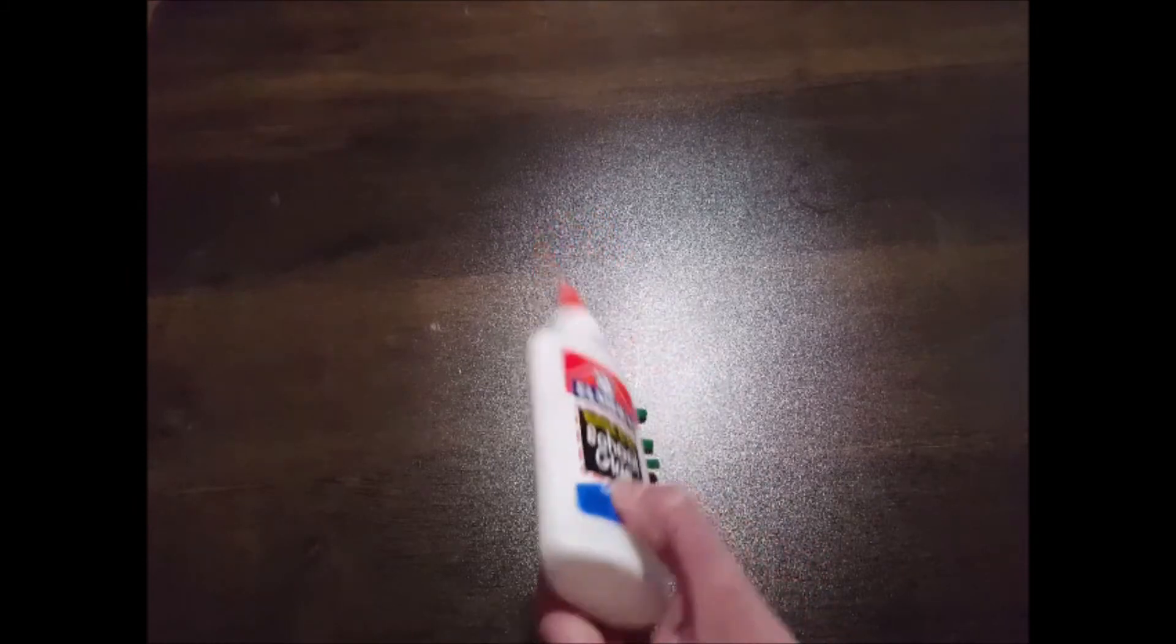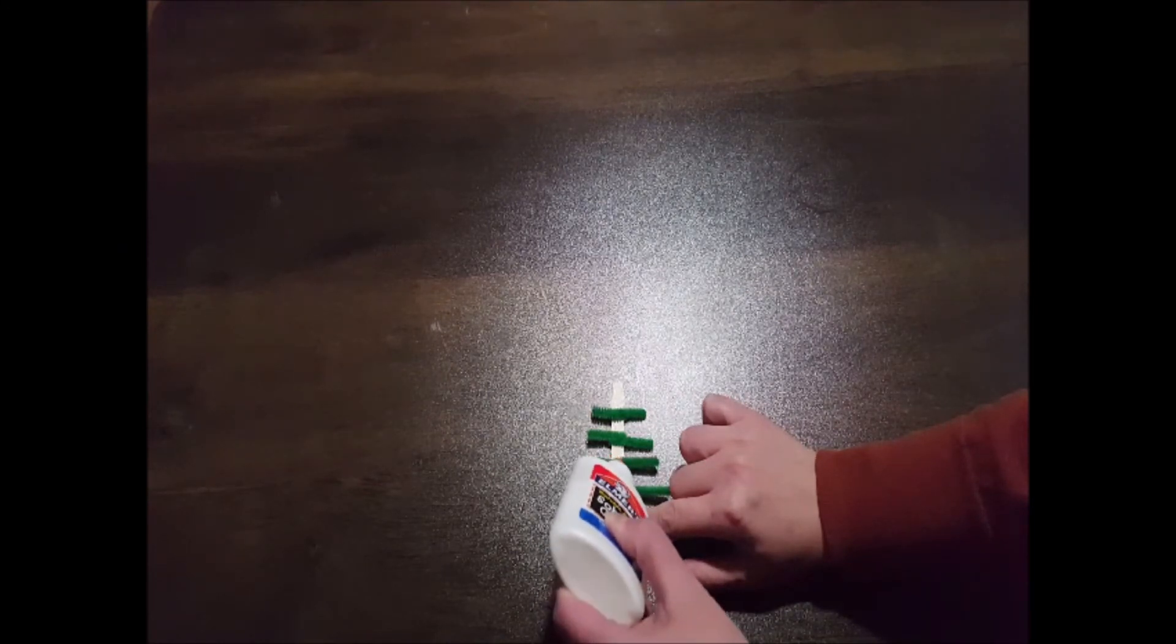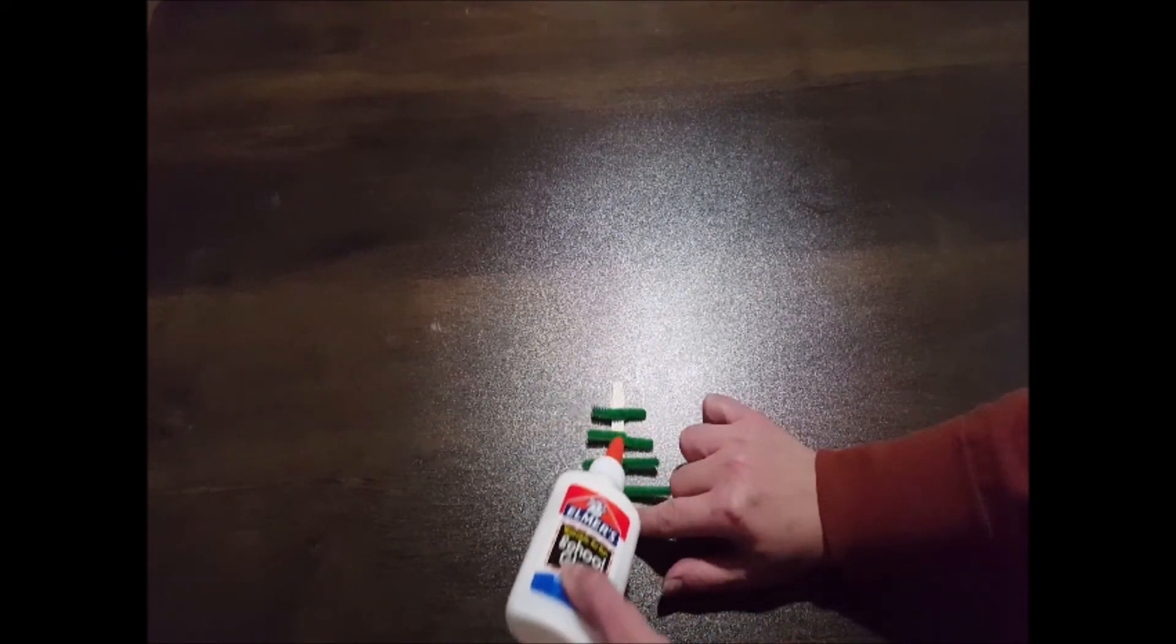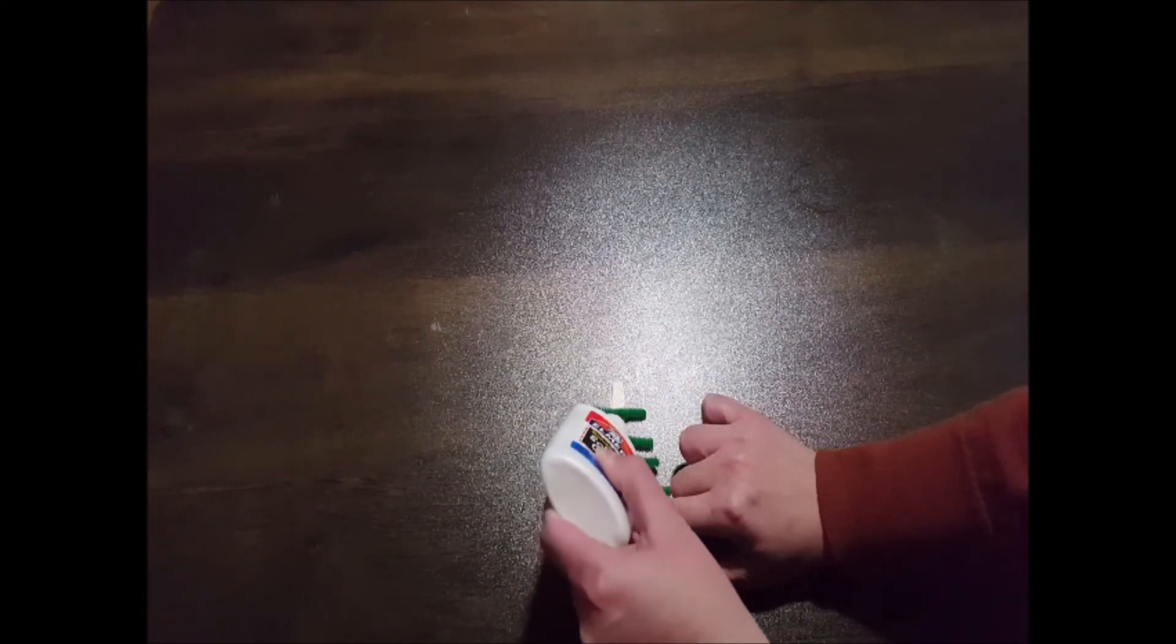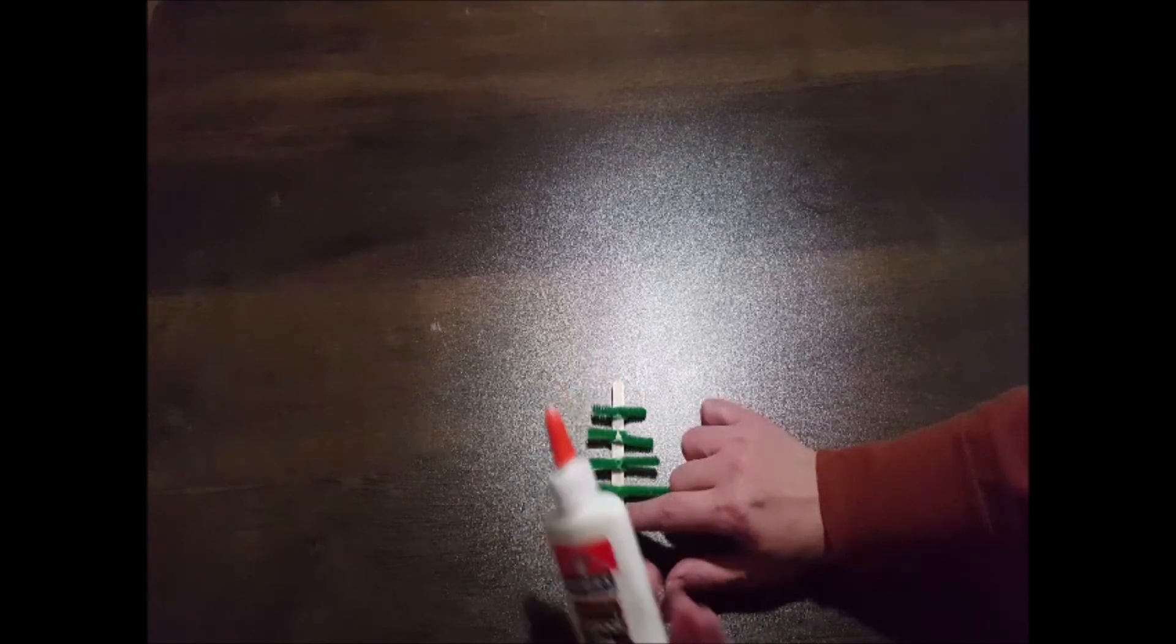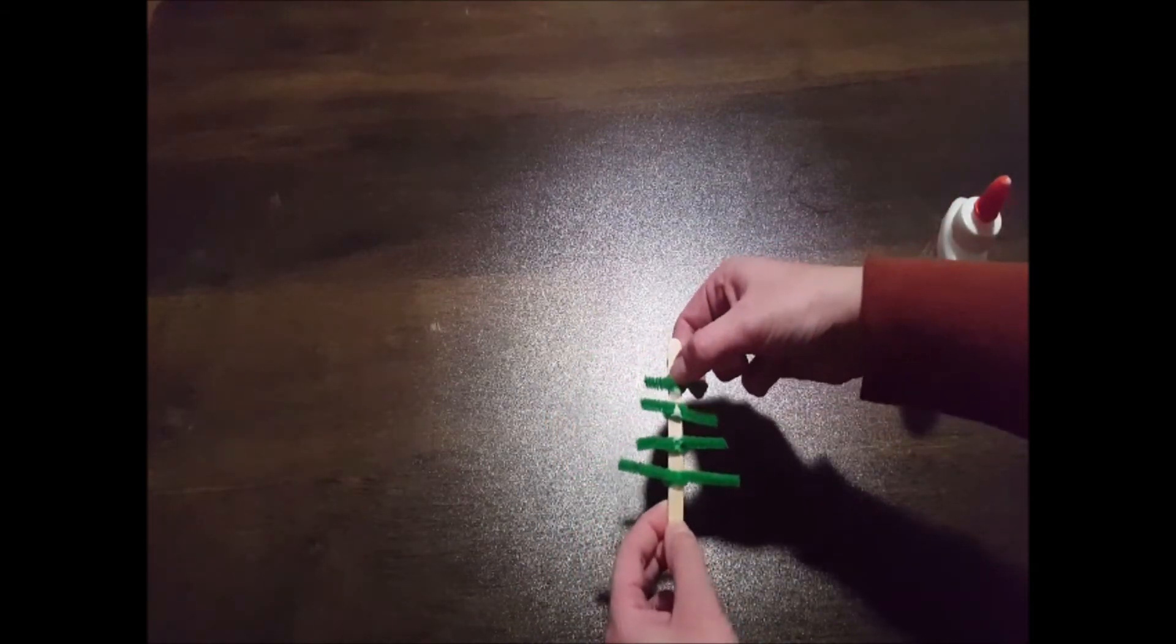We're going to want to make sure that our Christmas tree's branches stay in place, so I'm going to apply a little bit of regular craft glue to the back of each pipe cleaner. I'm going to try and get the glue kind of underneath it. That way it'll hold in place. And once all the glue is applied, I'm just going to set it aside and let it dry completely.